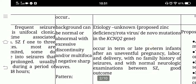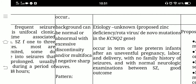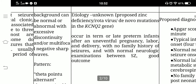The etiology is unknown; proposed causes include zinc deficiency, rotavirus, or de novo mutations in the KCNQ2 gene, though none are definitive. The condition occurs in term or late preterm infants following an uneventful pregnancy, labor, and delivery, with no family history of seizures and normal neurological examination between seizures. The outcome is good.